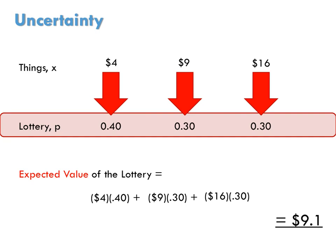Now let's see how a consumer who is risk-averse makes choices in the face of uncertainty. Suppose this individual starts with $9. She's then offered the following lottery. With 40% probability, she might lose $5, leaving her with only $4. With 30% probability, she may not lose or win any money, leaving her with her current $9.